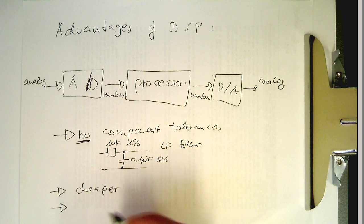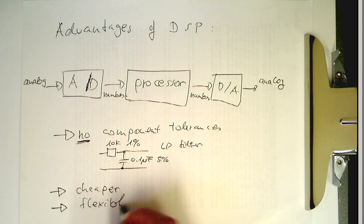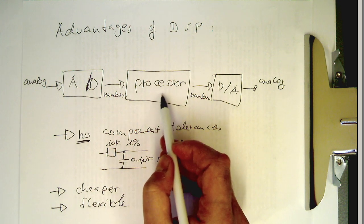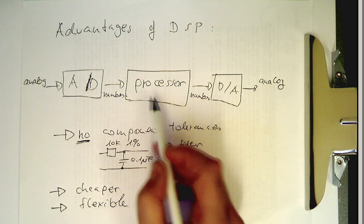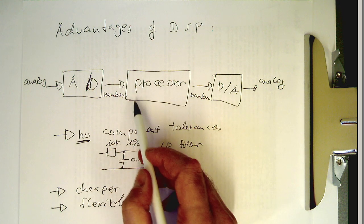Something also really important is it's flexible. We could just reprogram this processor, for example, from a low pass filter to a high pass filter just by changing the code. There's no rewiring required, so we can change very quickly the processing of this processor.